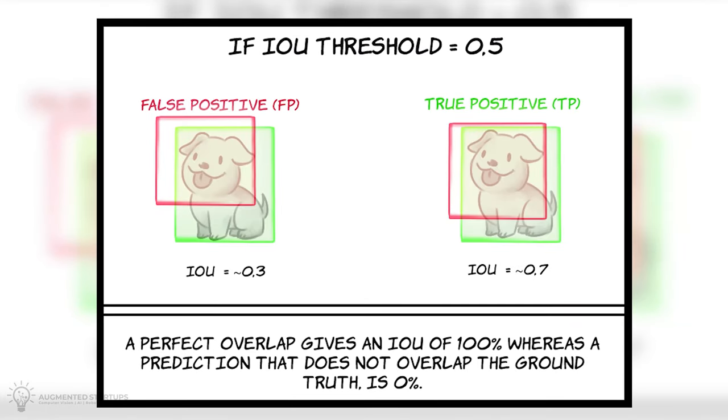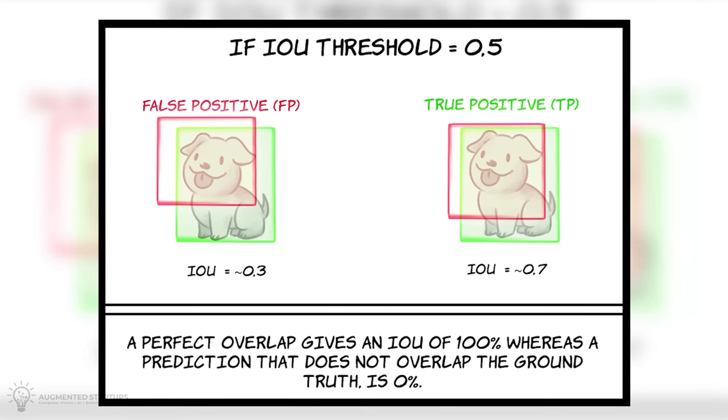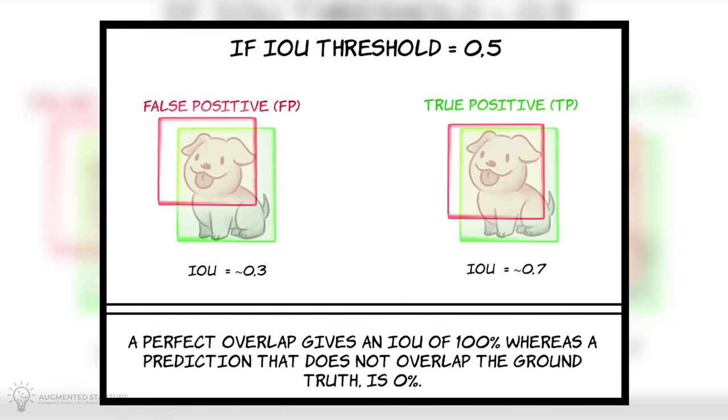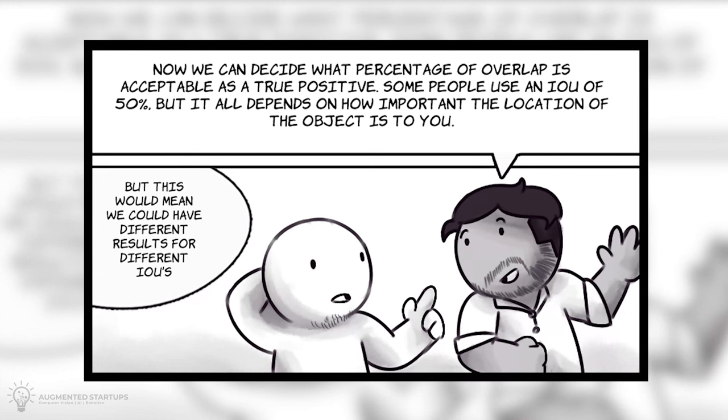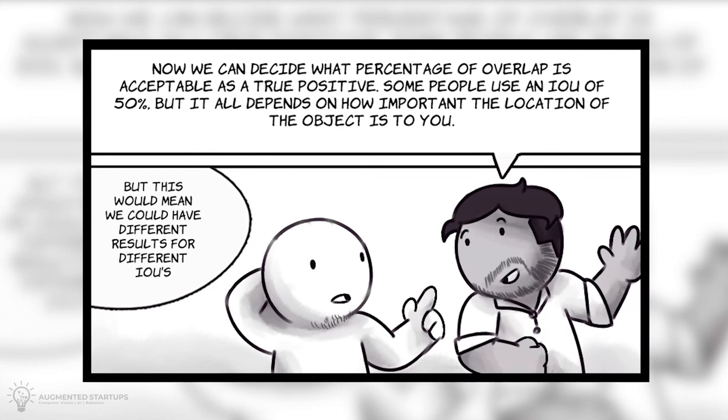So, if IOU threshold is equal to 0.5, an IOU predicted of 0.3 would result in a false positive, and an IOU of 0.7 would result in a true positive. So, a perfect overlap gives an IOU of 100%, whereas a prediction that does not overlap the ground truth is 0%. Now, we can decide what percentage of overlap is acceptable as a true positive. Some people use an IOU of 50%, but it all depends on how important the location of your object is to you.